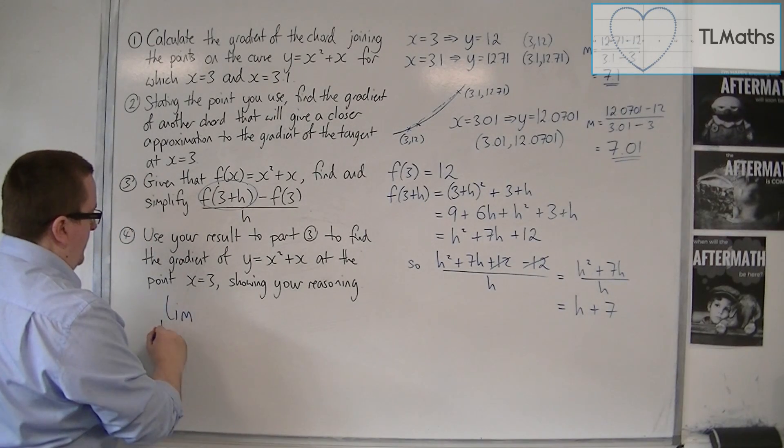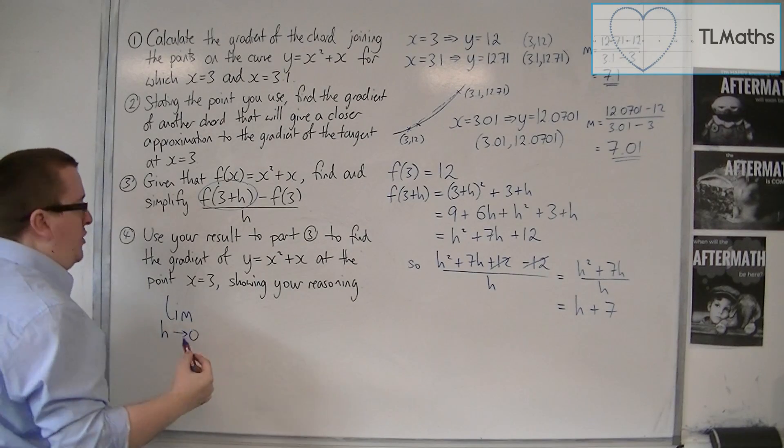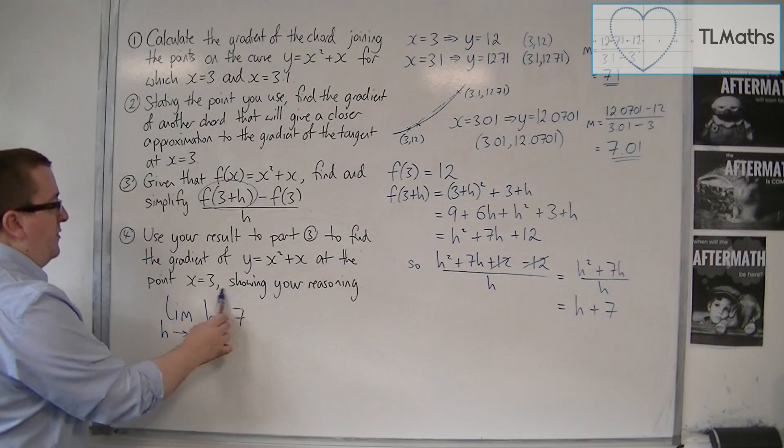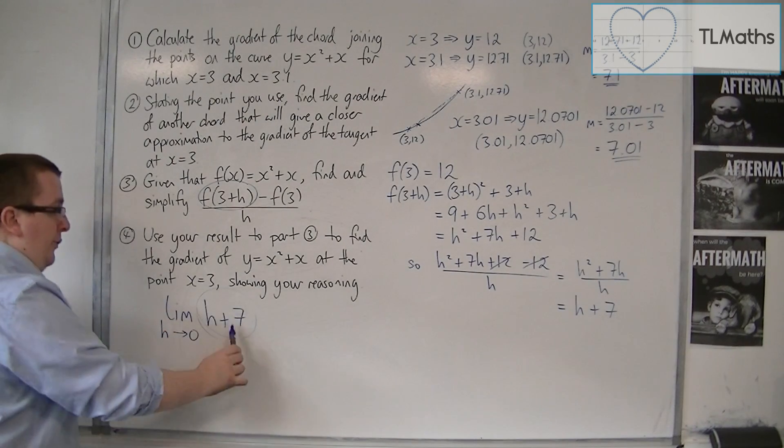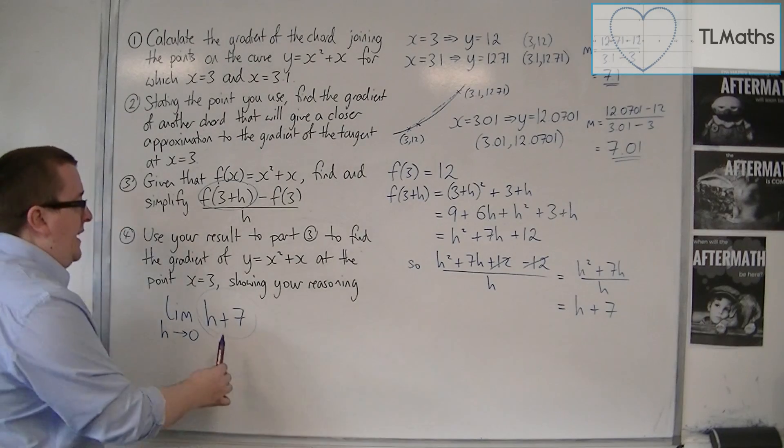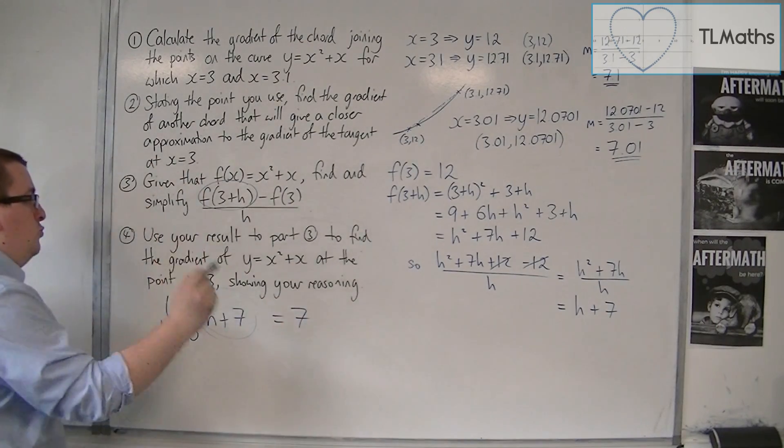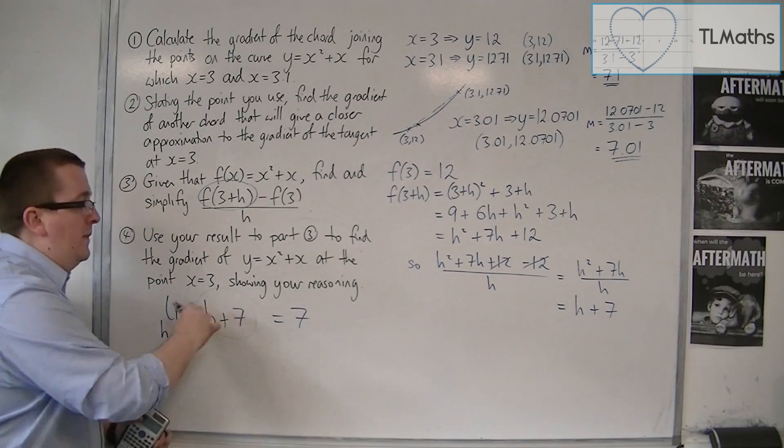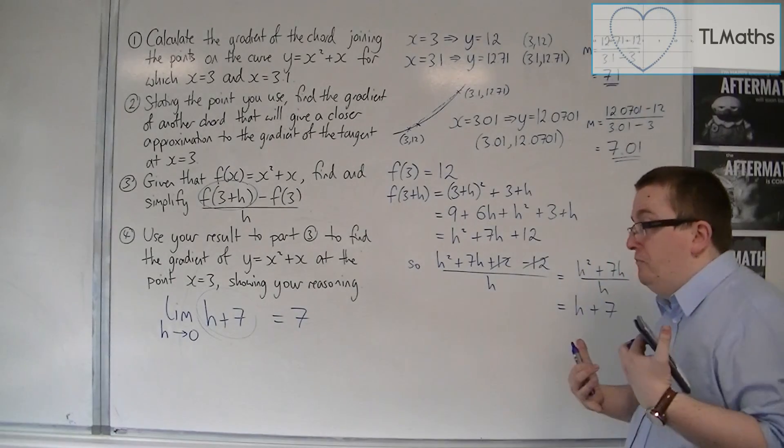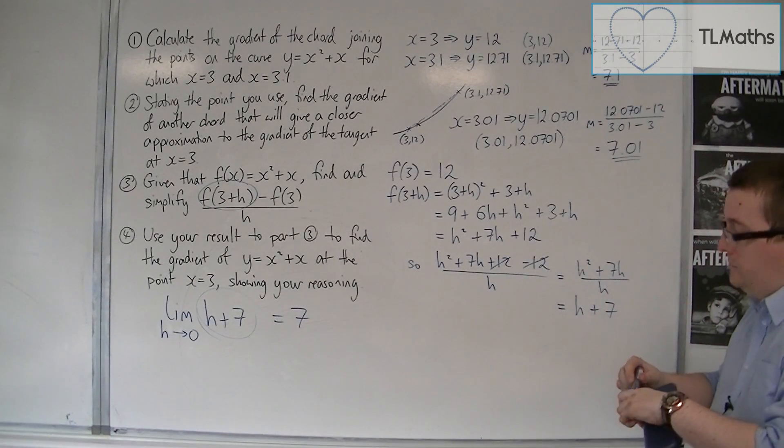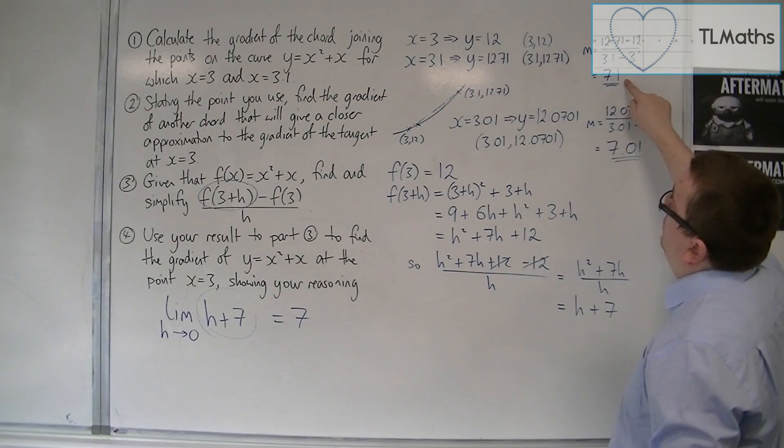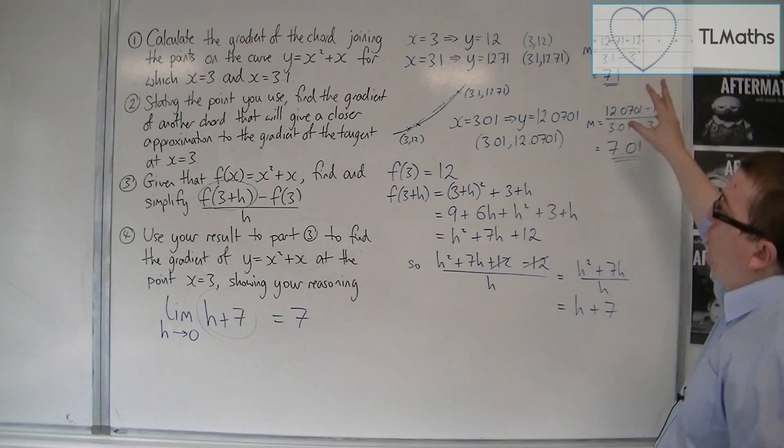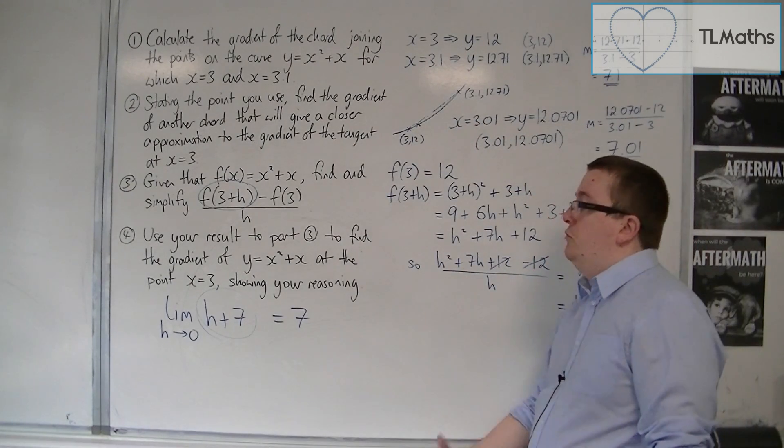So I put the limit as h tends to 0. I shrink h to 0 for that h plus 7, that gradient. And as h gets smaller and smaller and smaller, this gets smaller and closer and closer to just being 7. It's like having 0 plus 7. And so 7 is the gradient of y equals x squared plus x at the point x equals 3. And the reasoning is that I'm shrinking h to 0 and the gradient of the curve is getting closer to that value. And we could see it as our first example was 7.1, the second was 7.01, and the actual gradient is 7. So if I'm choosing points closer and closer and closer together, I'm getting a more and more accurate approximation.